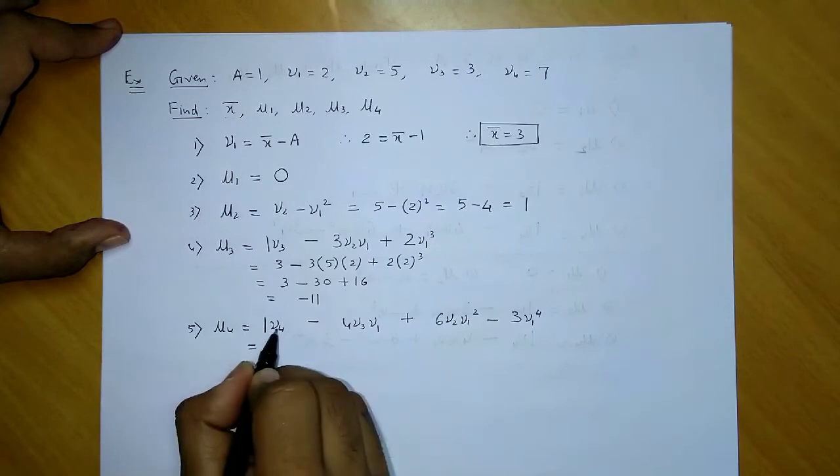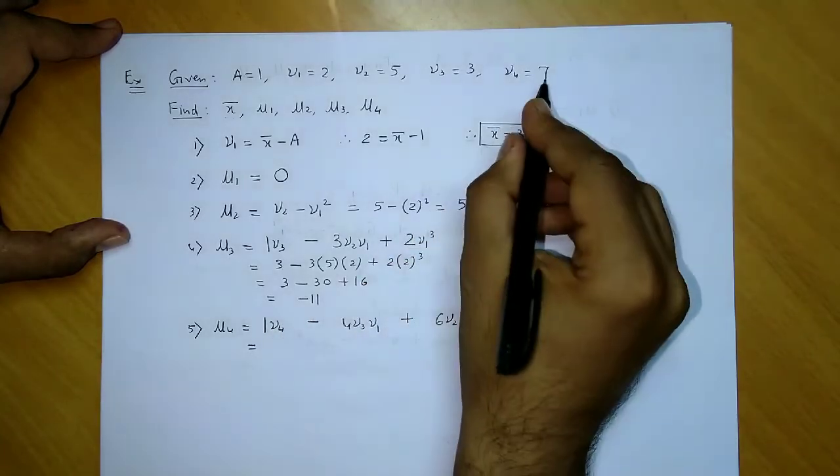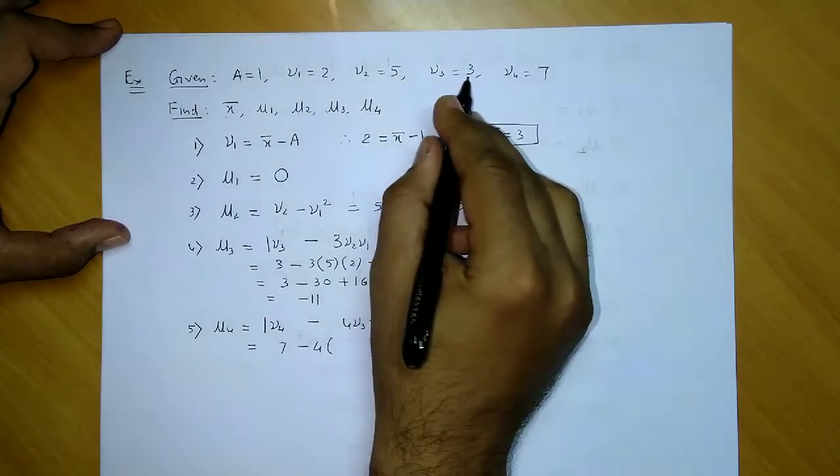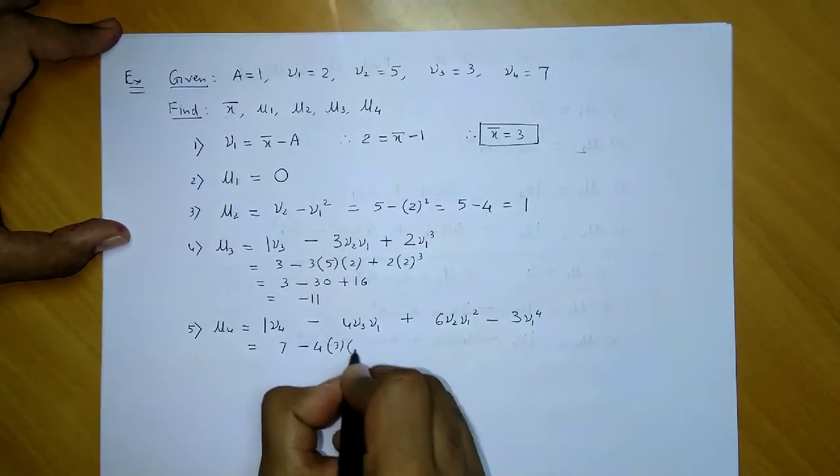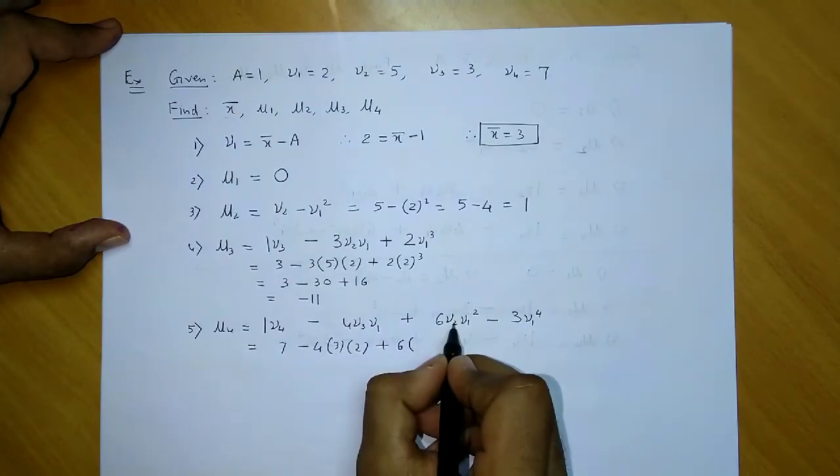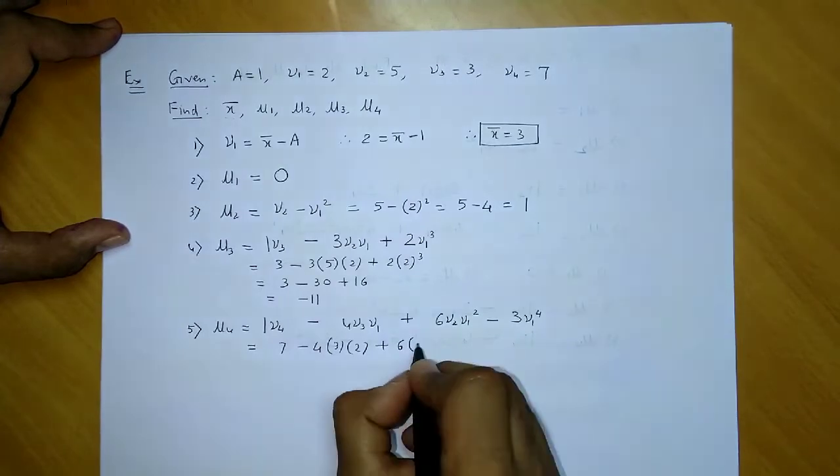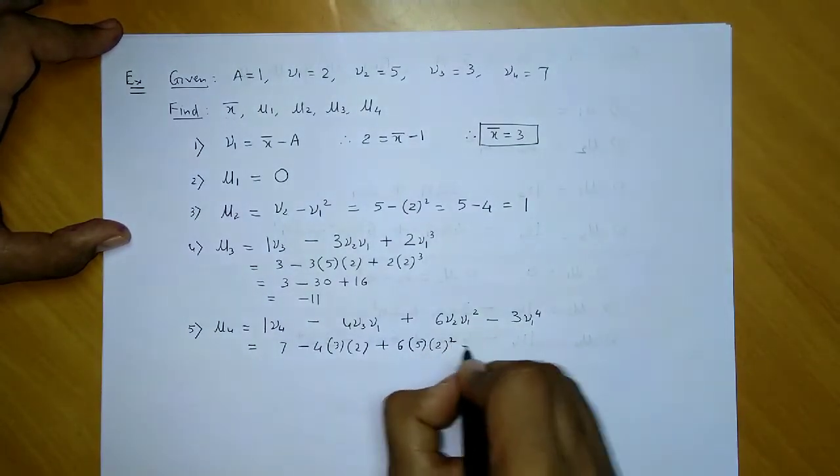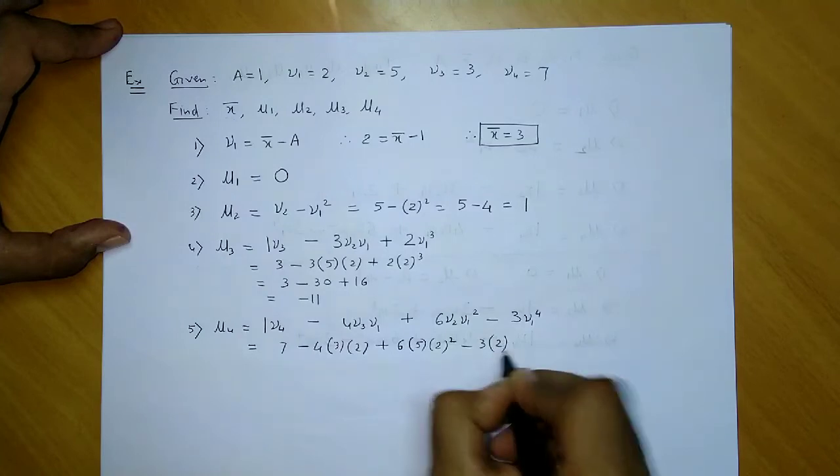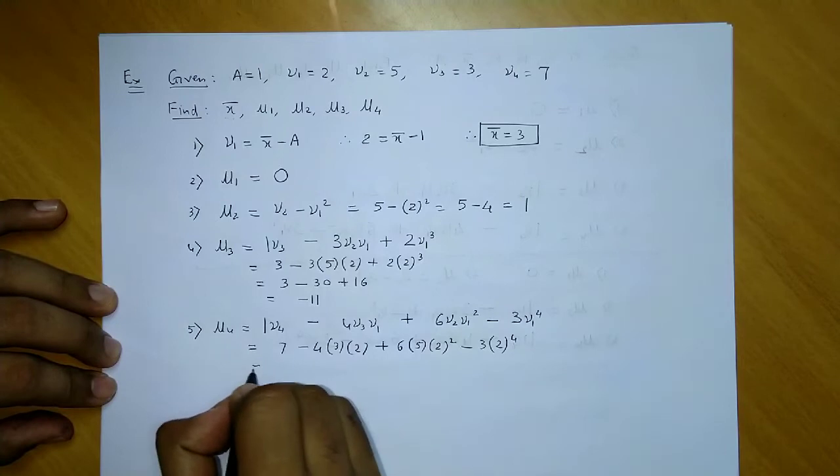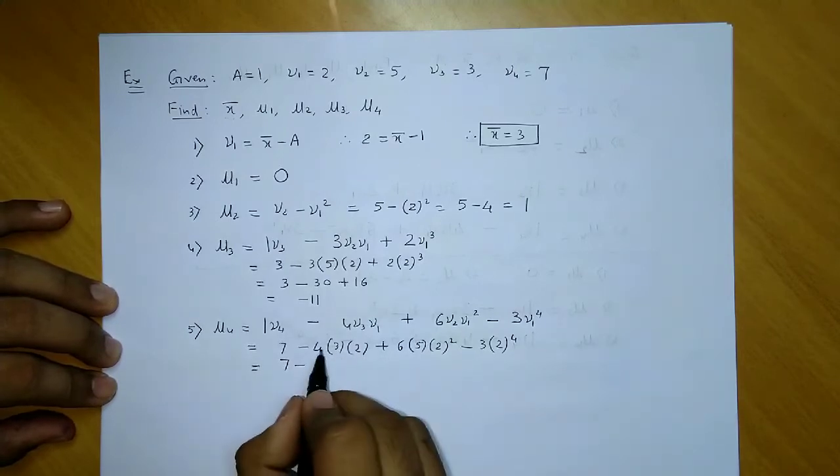Let's substitute. v4 is 7, minus 4 times v3 (which is 3) times v1 (which is 2), plus 6 times v2 (which is 5) times v1² (which is 4), minus 3 times 2⁴.